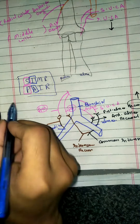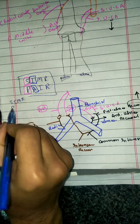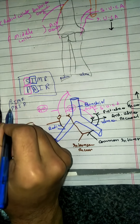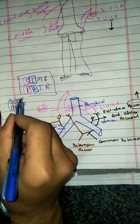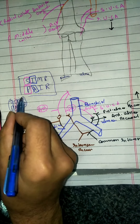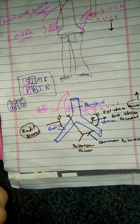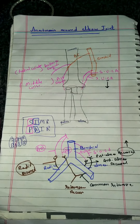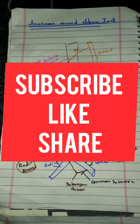So this is the mnemonic known as SIMMER PAIR — each collateral pairs with its corresponding recurrent artery. This is the anastomosis around the elbow joint. Thank you so much. Take care.